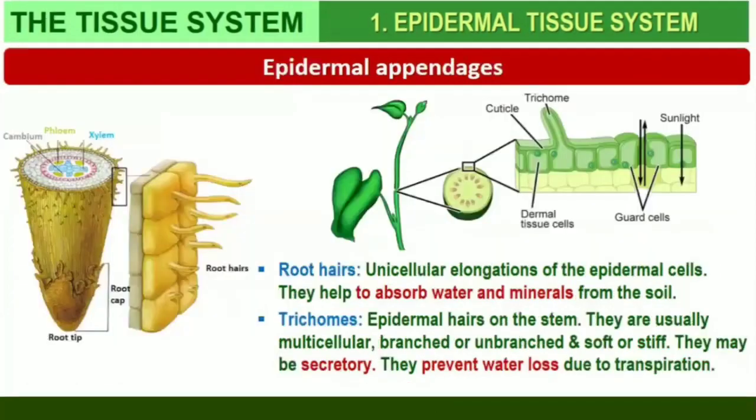The cells of epidermis bear a number of hairs. The root hairs are unicellular elongations of the epidermal cells and help absorb water and minerals from the soil. On the stem, the epidermal hairs are called trichomes. The trichomes in the shoot system are usually multicellular. They may be branched or unbranched and soft or stiff; they may even be secretory. The trichomes help in preventing water loss due to transpiration.